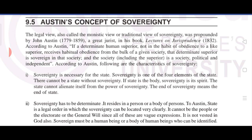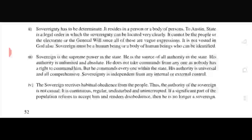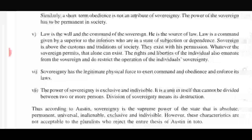The sovereign is a supreme power in the state and the source of all authority; that authority is unlimited and absolute. According to Austin, sovereignty in simple terms is the supreme power of the state that is absolute, permanent, universal, inalienable, exclusive, and indivisible. These are the characteristics of Austin's concept of sovereignty.